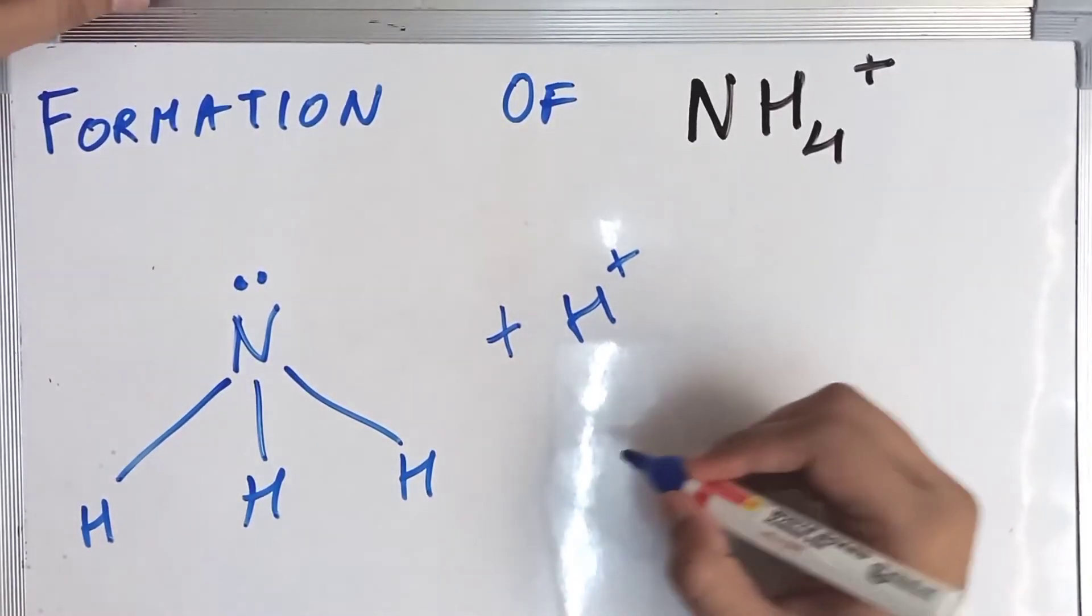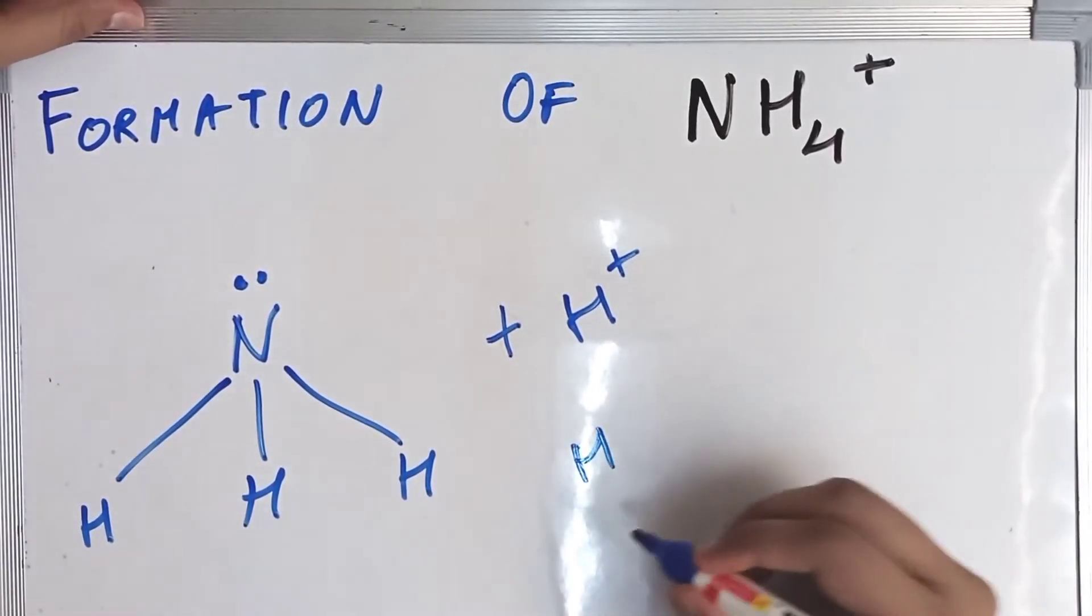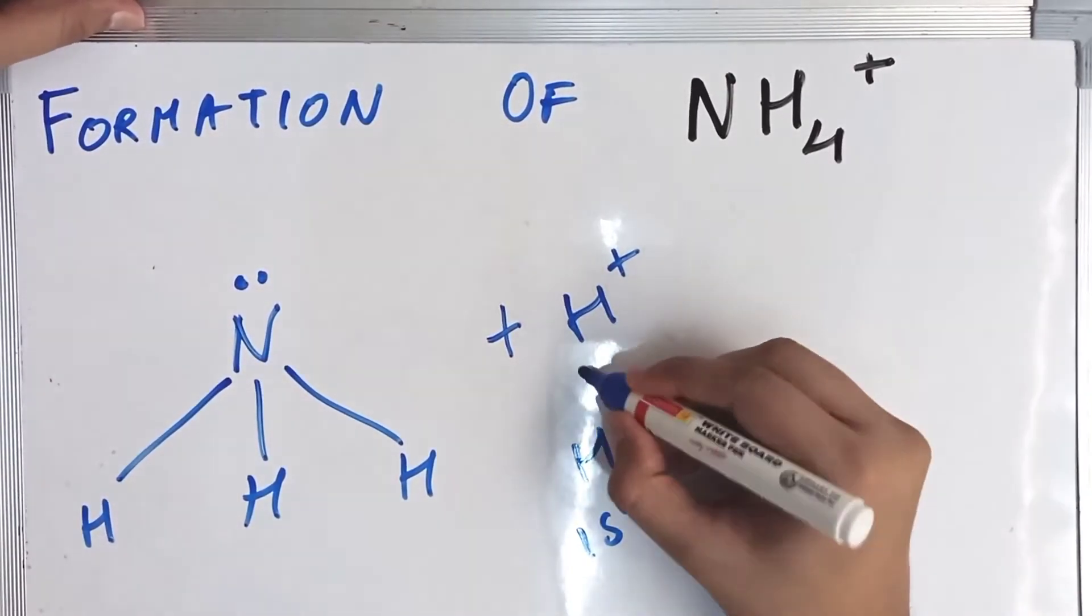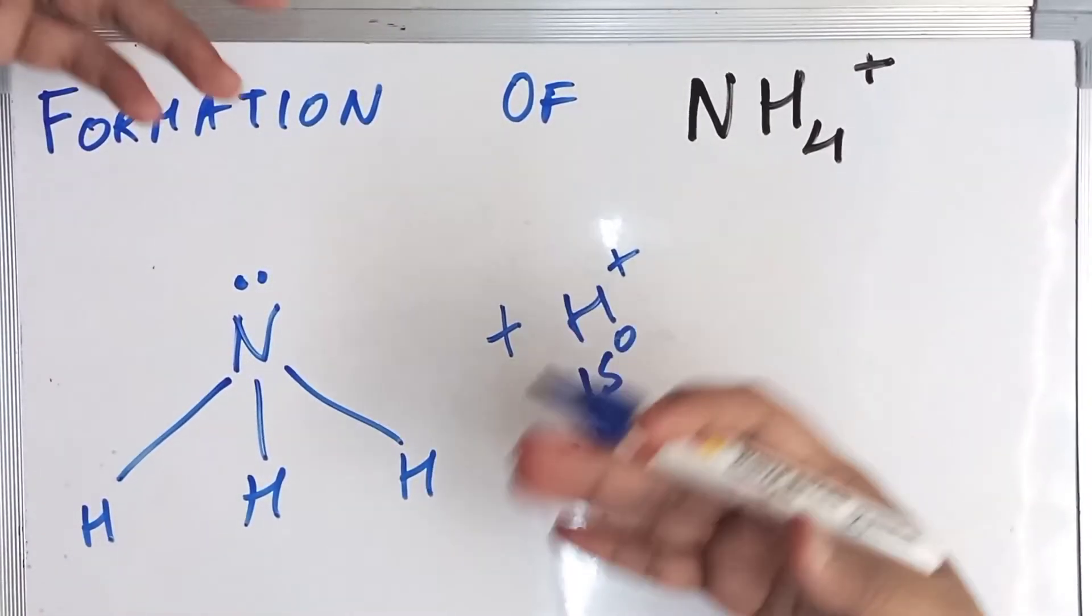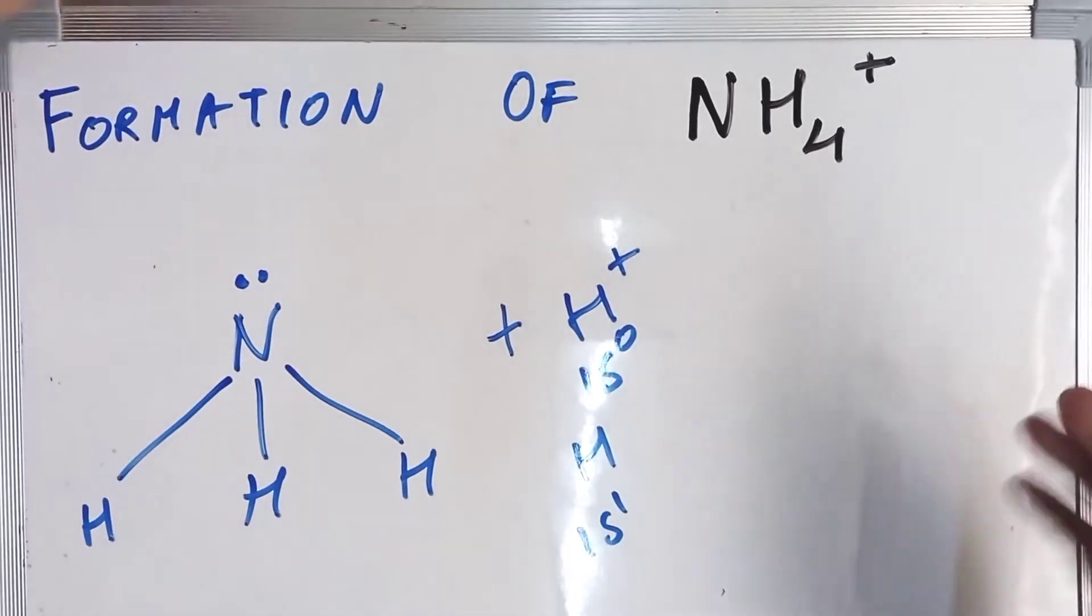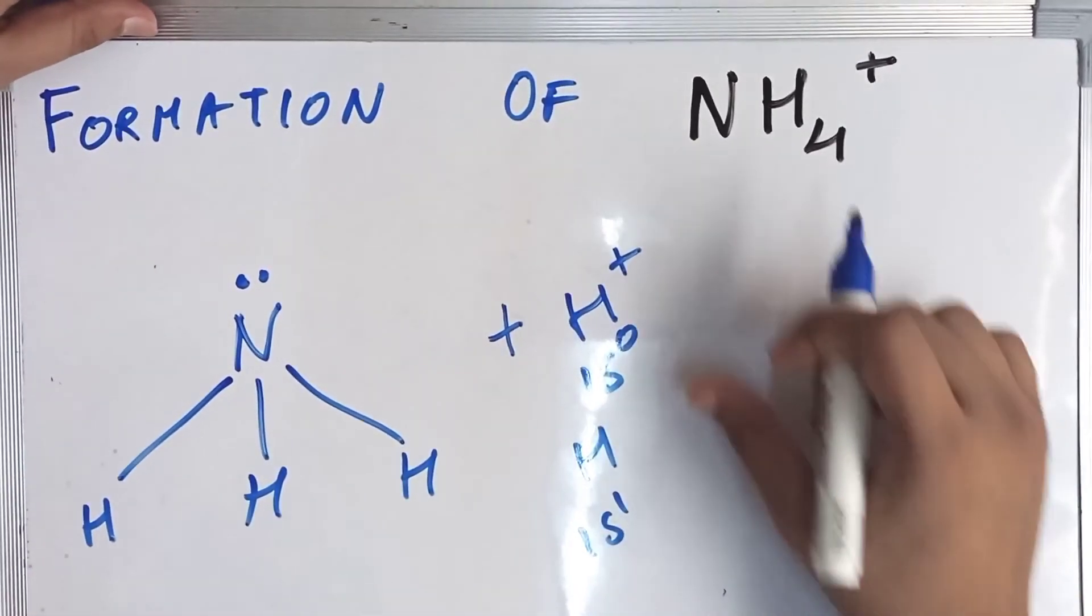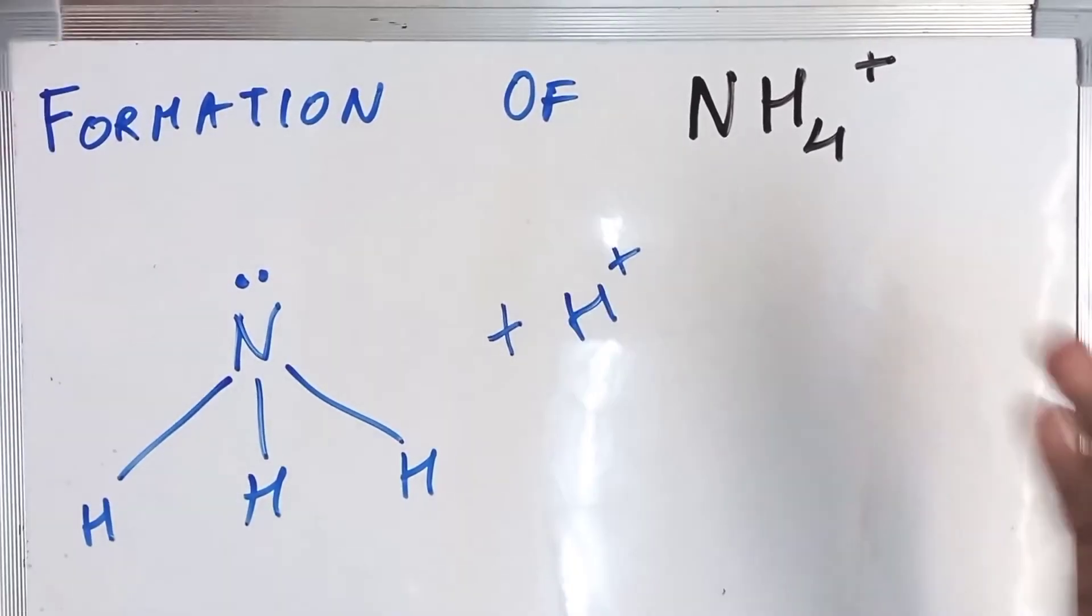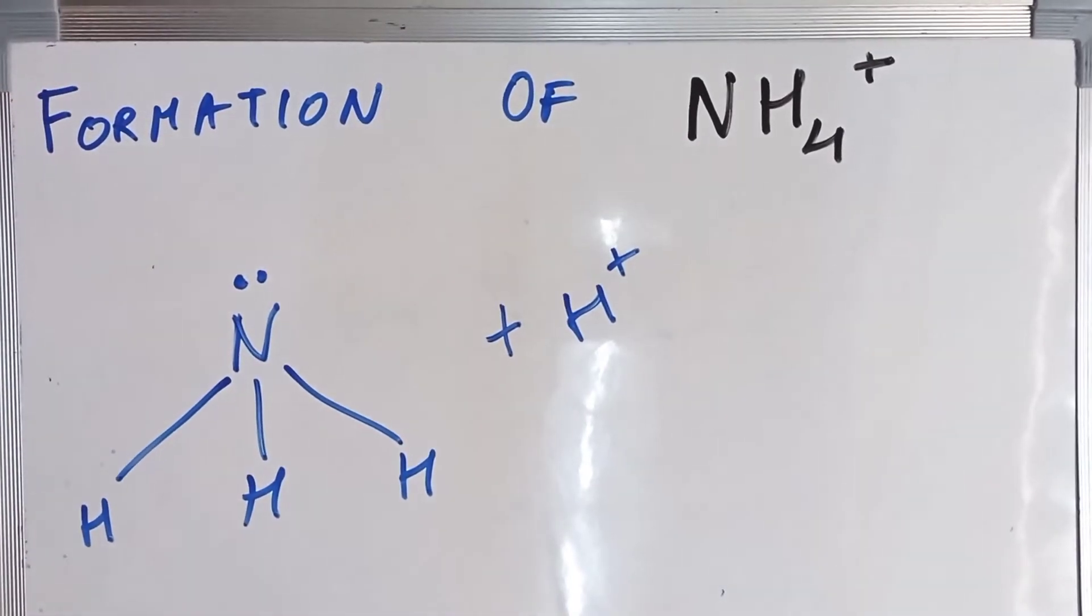H+ has no electrons. The electronic configuration of hydrogen is 1s1, and H+ is just 1s0, which means it has zero electrons in it. So H+ basically is starving for electrons.